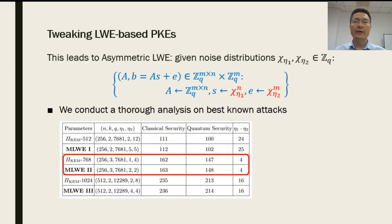Now, the concrete security is based on an asymmetric variant of the standard LWE, where the secret key and noise are chosen from distributions with different parameters, eta1 and eta2. Obviously, when eta1 is equal to eta2, this is exactly the standard LWE problem.